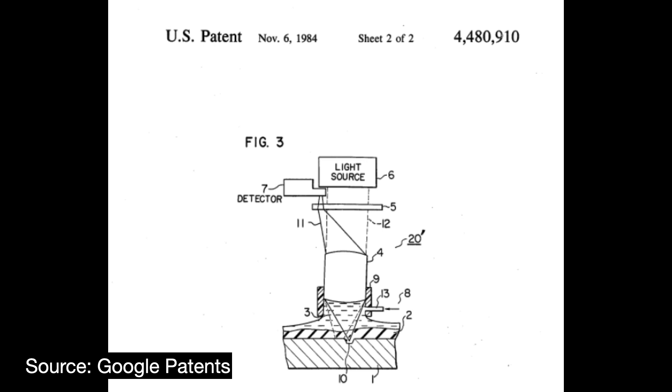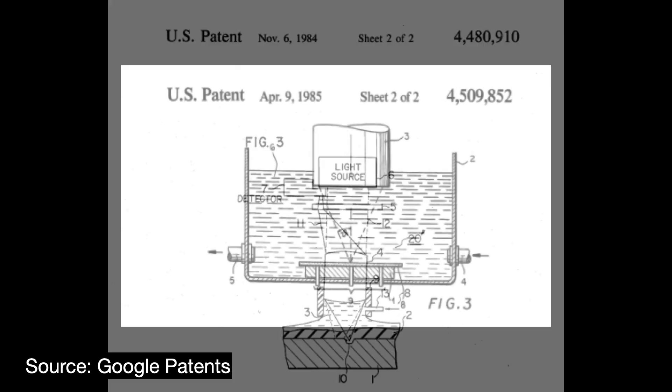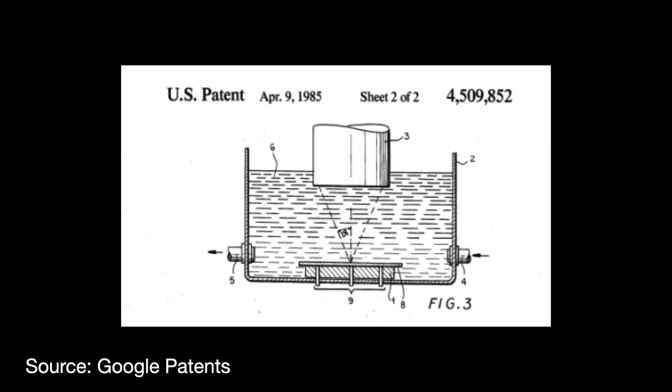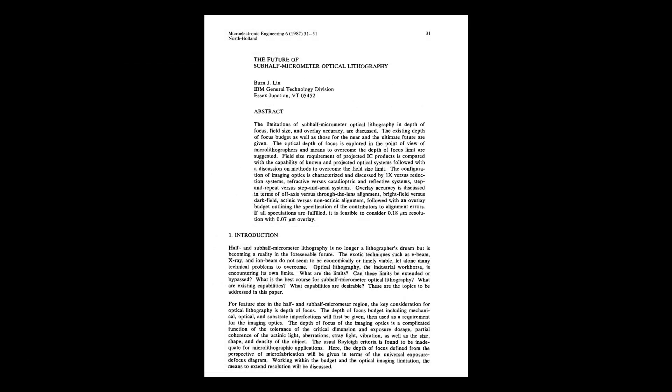In 1985, Werner Tabarelli and Ernst Lobach, working for the American company Perkin Elmer, filed a patent that had the lens directly sitting in water. Then in 1987, Berne Lin, at that time working for IBM, proposed using it to enhance the depth of focus for the then-emerging 249 nanometer lithography. 193 at the time was still in the conceptual stage.